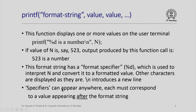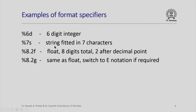In short, the format string has format specifiers and all other characters are displayed as they are. Specifiers can appear anywhere, but each must correspond to a value appearing after the format string. Here are some examples of format specifiers: %6d means a 6-digit integer, %7s means a string fitted in 7 characters, %8.2f means a floating point representation with a total of 8 digits and 2 digits after the decimal point, and %8.2g means the same thing but uses e-notation if the number is very large or very small.